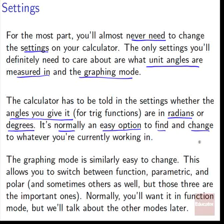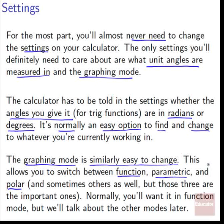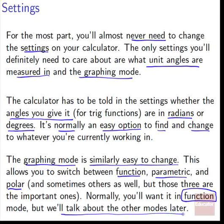The other setting you need to care about is the graphing mode, which is similarly easy to change. This allows you to switch between function, parametric, and polar graphing modes — and sometimes other modes as well — but those three are the really important ones. Normally, you'll want it in function mode most of the time, and that's what we'll be talking about first. We will talk about the other modes later. The last lesson of this appendix will cover parametric and polar, but normally you'll do all your work in function graphing mode, and that's what you want to usually leave it in.